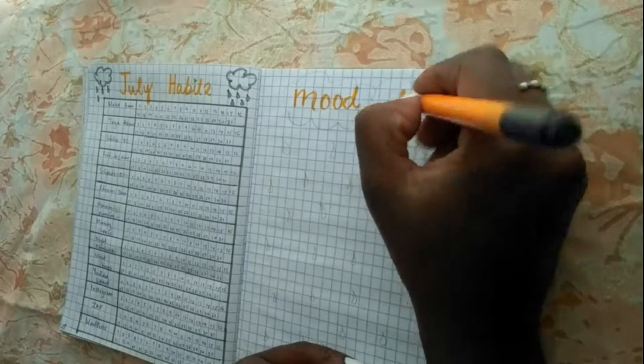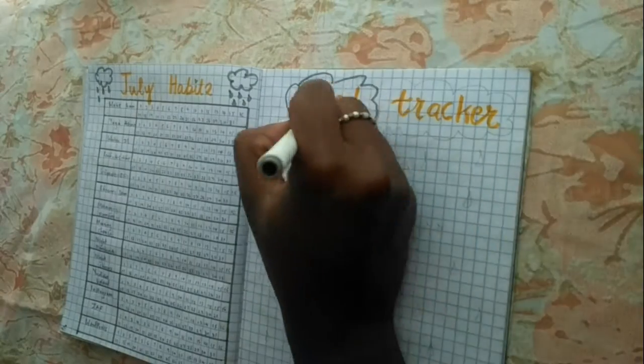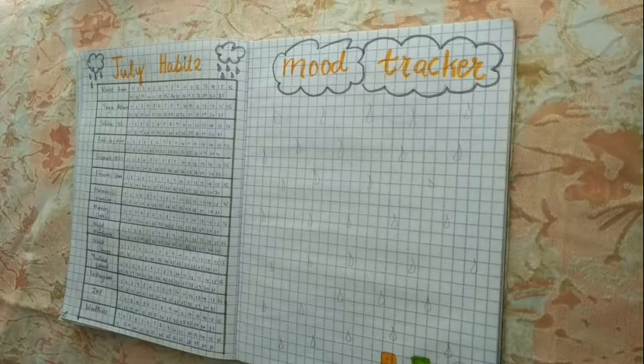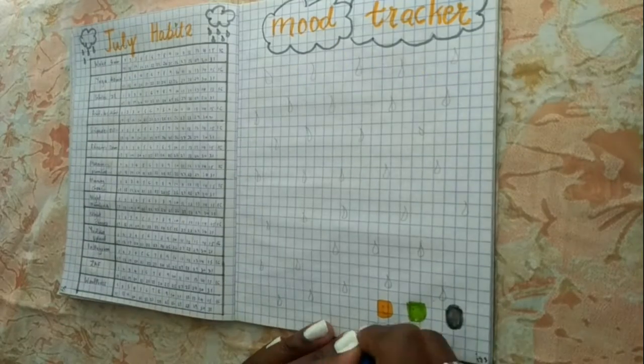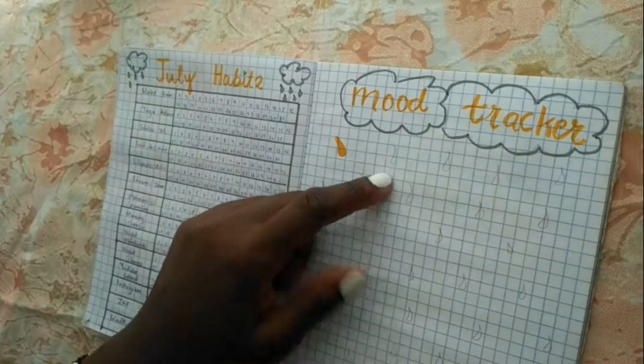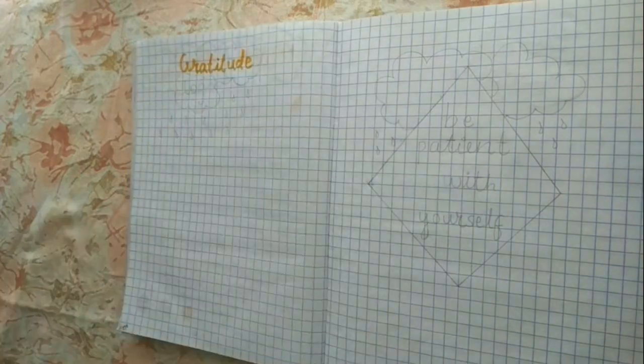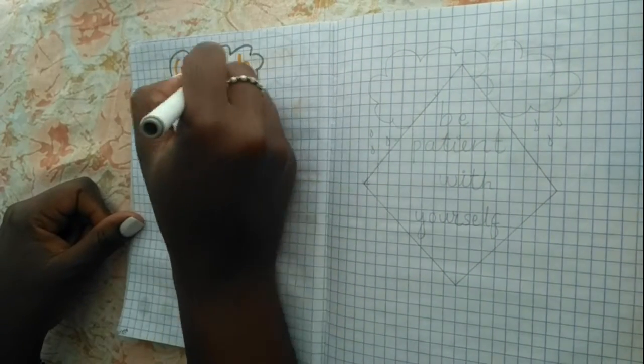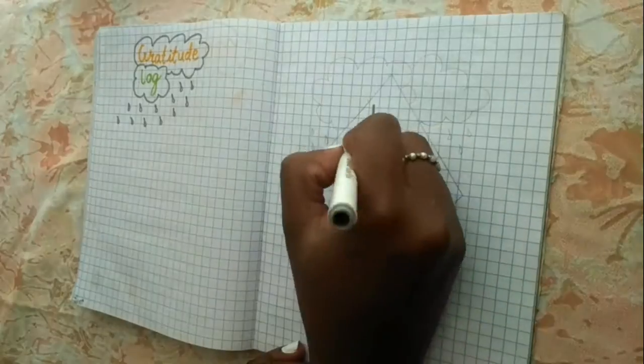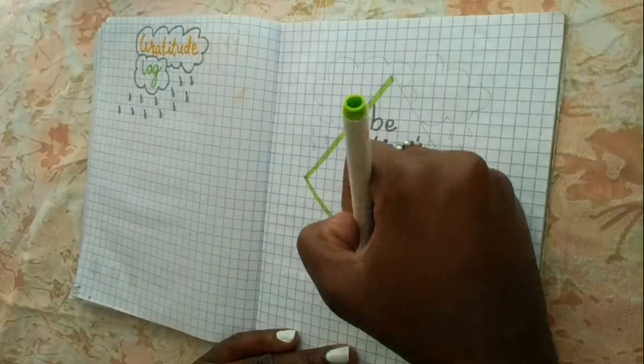For July mood tracking, I had the title at the top of course, and then I had the raindrops with the dates already set up in pencil. I just filled this up as the days went by for the very few moods I was tracking. At the bottom of course I had the legend. Here I set up my gratitude log, of course, because there's something good in every month. And then for the next page, just another mindful quote because you can never have too many mindful quotes.